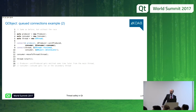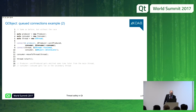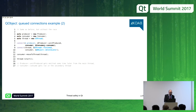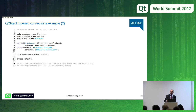A question about auto-connection: when is the connection type evaluated — during connect or during signal emission? The answer is at signal emission time. Every time a signal is emitted, Qt checks if the receiver object lives in the same thread. If it's in the same thread, the invocation is direct. If it's in another thread, the invocation is queued. This check happens every single time a signal is emitted.